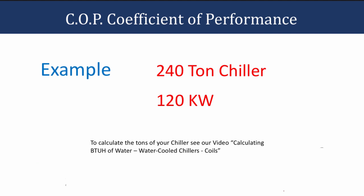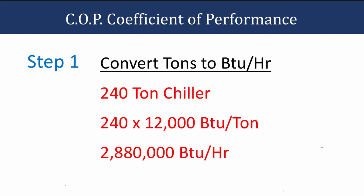Let's take an example of a 240-ton chiller with an input power of 120 kilowatts. To calculate the tons of your chiller, see our video on calculating BTUs per hour of water for water-cooled chillers and coils if you want to know how to get the tons of chilled water. Step one is to convert the tons to BTUs per hour.